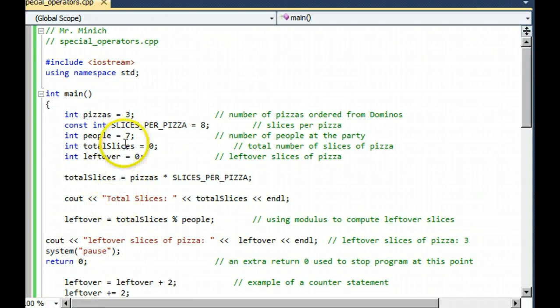Special operators demo program. Notice that we have the variables pizzas, people, total slices, and leftover, and they're all set equal to zero.